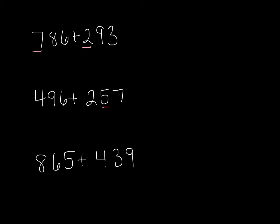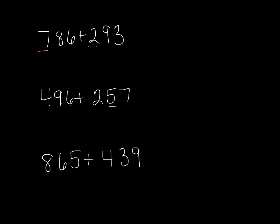786 would round to 800. 293 would round to 300. 800 plus 300 is 1,100.